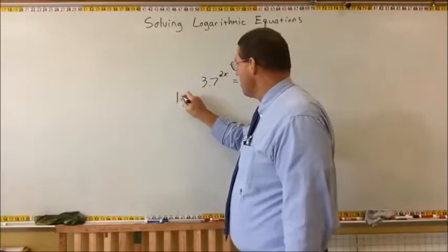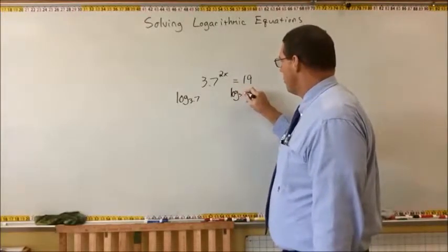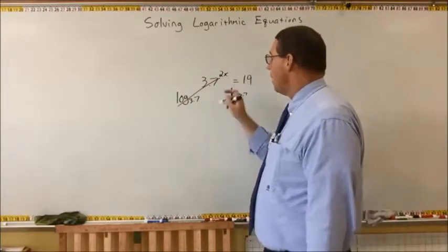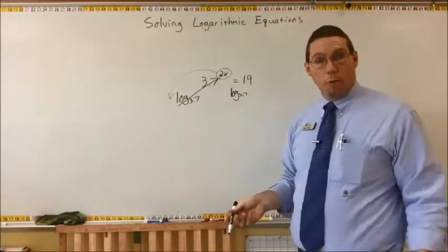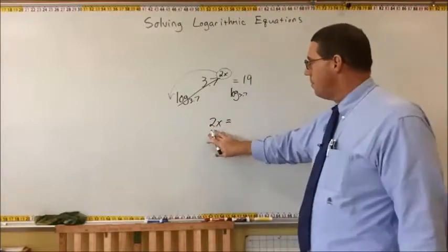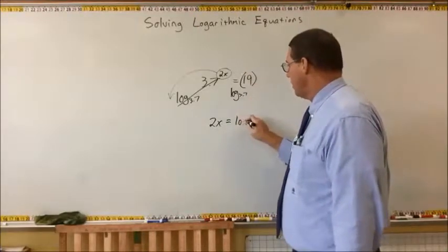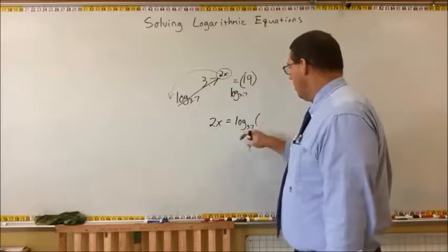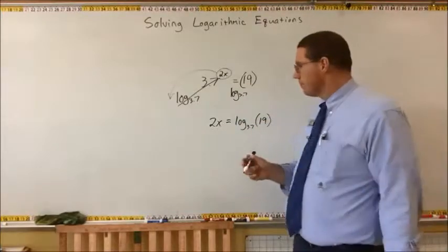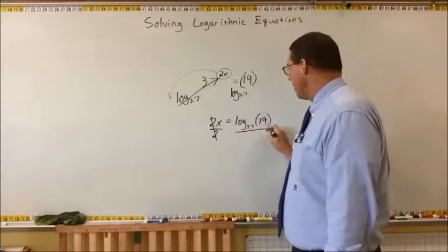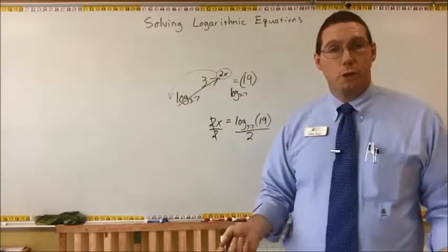To cancel this 3.7, we apply a logarithm — we do log base 3.7 to both sides. That's going to cancel this exponential base, and because of the exponent-to-multiplication property of logarithms, this 2x is simply going to come down and be set free from its base. Now over here, we have log base 3.7 of 19. We have set the exponent free at the cost of making the other side a logarithm. Now we would just divide by 2 on both sides, and we would have x is equal to log base 3.7 of 19, all divided by 2, which you could do in a calculator.